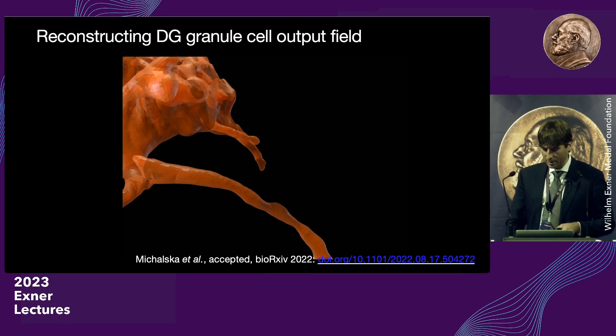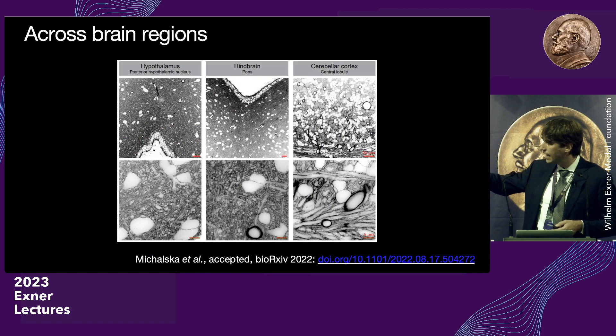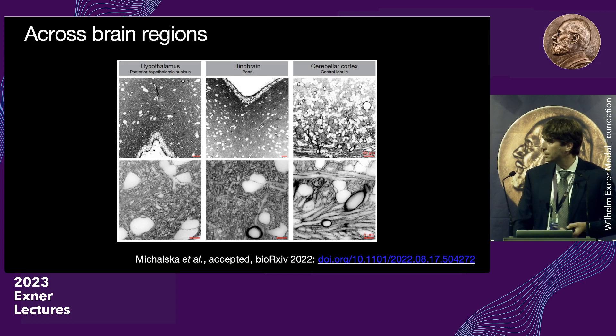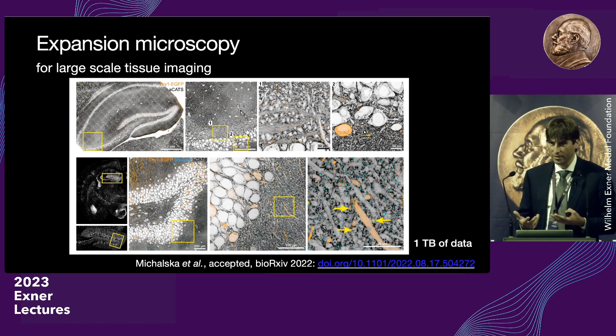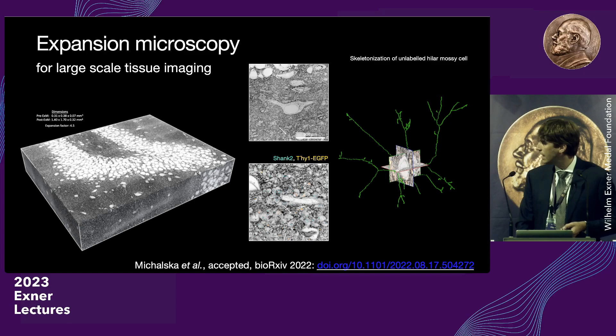We can look at various brain regions, and it's quite fascinating how diverse the brain is. Obviously, one would then like to image large regions, which is where we go back to expansion microscopy. You see here the entire hippocampus — the region very important for information storage and spatial navigation — expanded with its cellular architecture, and we can trace out an individual cell in such large-scale datasets.